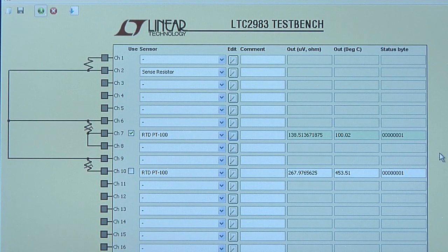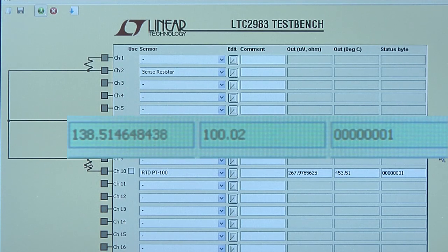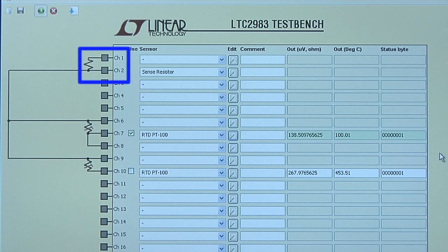As you can see, the demonstration system is collecting the LTC2983 output, which is precisely reading 100 degrees C. The corresponding R-sense resistor is tied between channel 1 and 2, and its value is stored in the LTC2983. The 2K ohm sensor resistor is shared between all three sensors on the demonstration board.